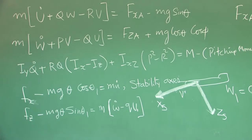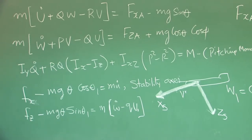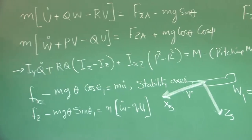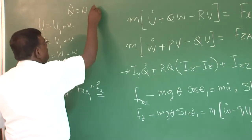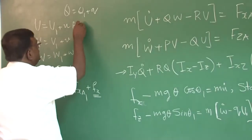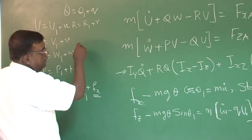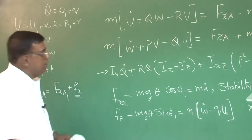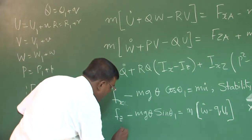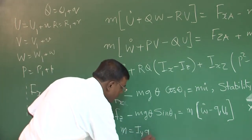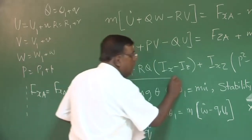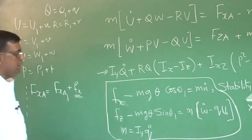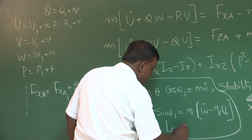For the pitching moment equation, writing q = q₁ + q̅, r = r₁ + r̅, θ = θ₁ + θ̅ and substituting into the pitching equation gives: M = Iy·q-dot. These three equations are the perturbed equations of motion for the longitudinal case.